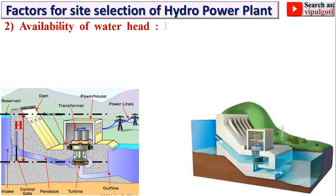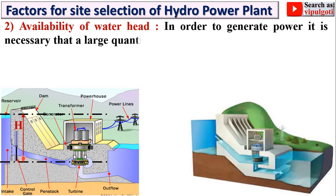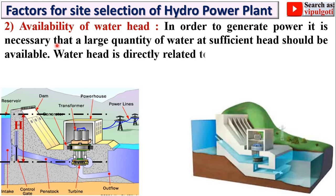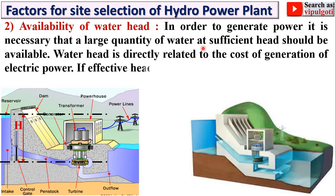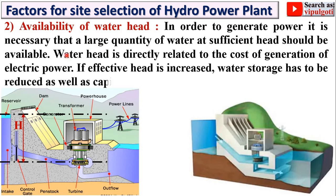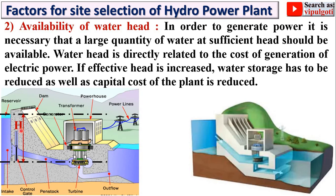The next point is availability of water head. As you can see in the figure, in order to generate power it is necessary that a large quantity of water at sufficient height should be available. Water head is directly related to the cost of generation of electric power. If the effective head is increased, water storage has to be reduced and the capital cost of the plant is also reduced. In short, if the available water head is increased, then automatically the capital cost of the plant is reduced.